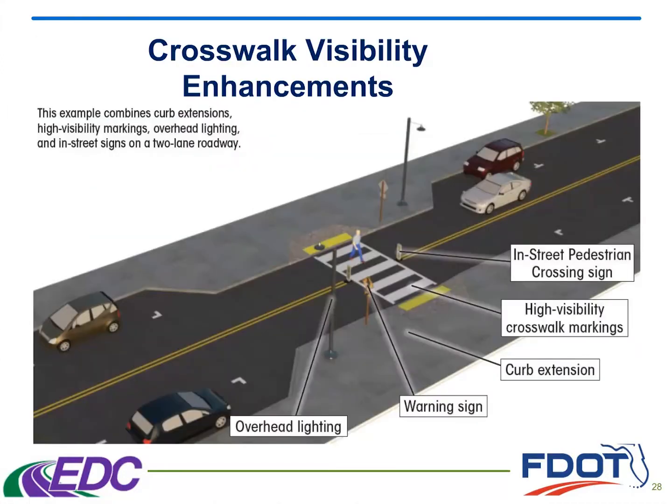This graphic shows how many of these elements may be used in combination to provide a more effective and visible crossing. This example shows curb extensions, high visibility markings — which we call special emphasis markings — overhead lighting, and in-street signs on a two-lane roadway. Keep in mind as we go through this presentation and talk about each countermeasure, how much more effective they can be when combined with others.